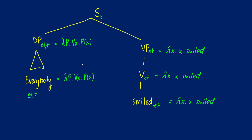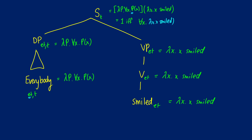Let's do some application. At the sentence level, we have lambda P dot for all X, P(X) — that is the function. We apply that function to our argument, lambda X dot X smiled. What we do is take lambda X dot X smiled and substitute it directly into P, getting rid of lambda P since we've now filled it in.